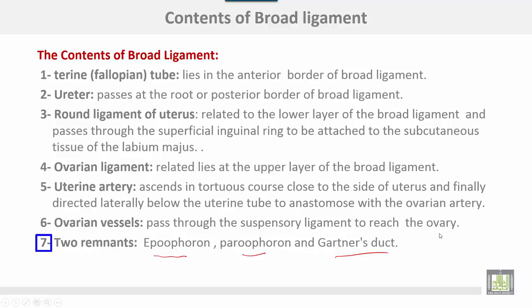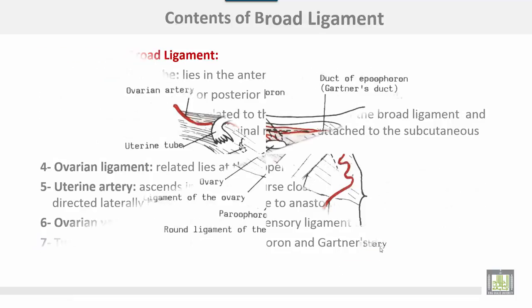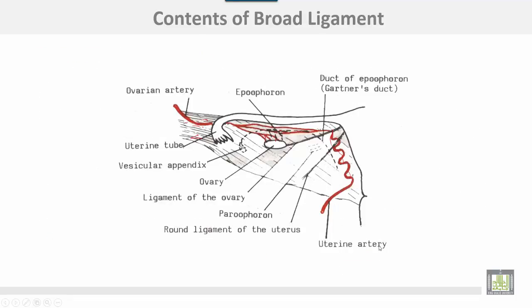Two remnants within the broad ligament: epoophoron, paroophoron, and the Gartner's duct. The contents include the ovary, uterine artery, and fallopian tubes.